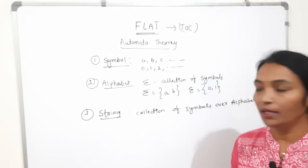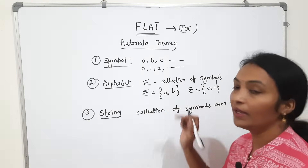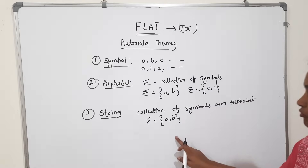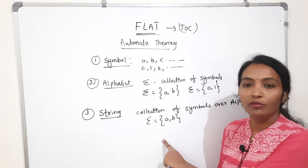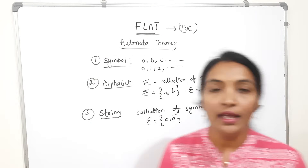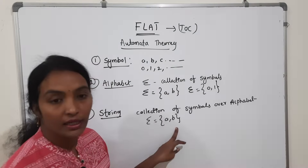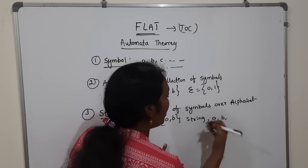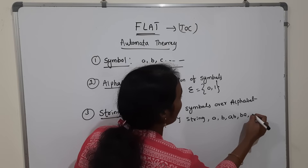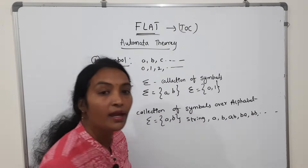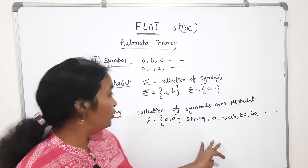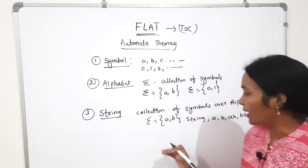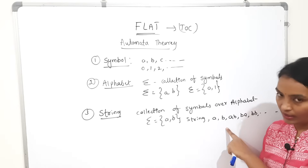Suppose I take alphabet {A, B}. From this alphabet, strings depend upon the length. I can write strings like: A, AA, AB, ABA, BAB, BB, and so on. That is nothing but a string. The length of a string determines what strings are possible.